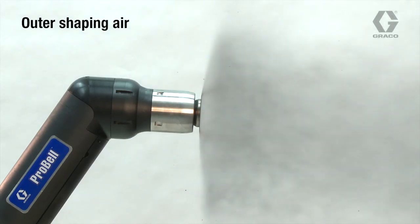Outer Shaping Air can act as a guide, narrowing wide patterns made by inner shaping air. Outer Shaping Air produces a tight pattern with a strong spray, which is good for finishing small spaces and tight corners.